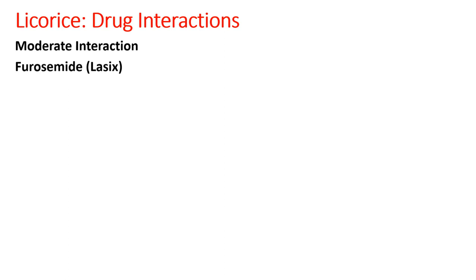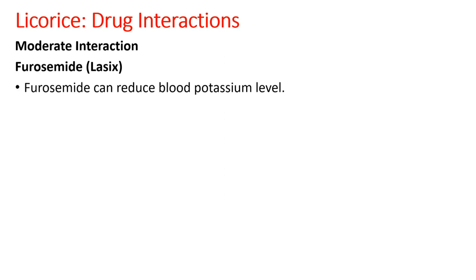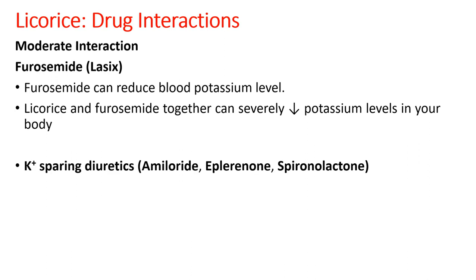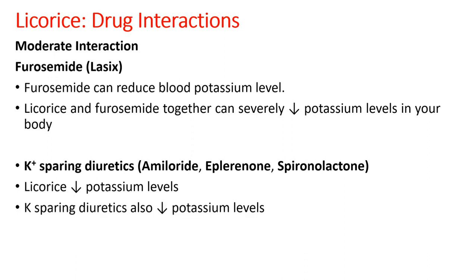Furosemide, which is a potent diuretic, reduces blood potassium level — and licorice also reduces blood potassium level. Co-administering liquorice along with furosemide can be threatening because it severely affects potassium levels. Similarly, potassium-sparing diuretics like amiloride, eplerenone, or spironolactone can prove problematic because both liquorice and these diuretics decrease potassium level, and a cumulative reduction in potassium can prove life-threatening.